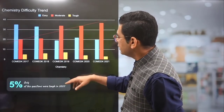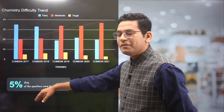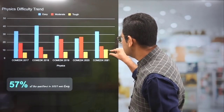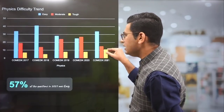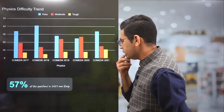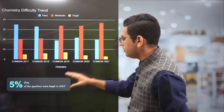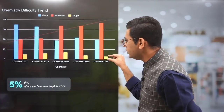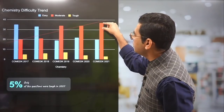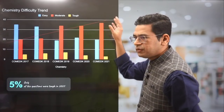In chemistry, the trend has been that only 5% of the questions were tough. So out of 60, maybe only 2 or 3 questions will be tough. Most were in the moderate section and there were easy questions also — about 20 were easy and the rest of the paper was moderate.